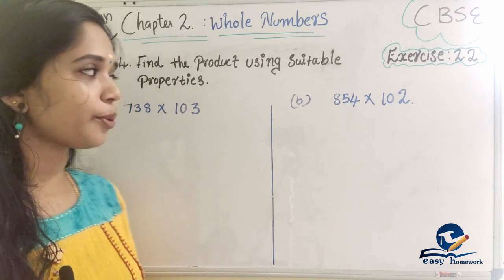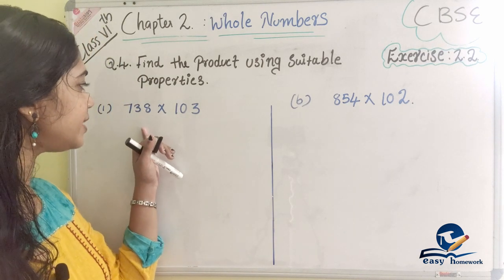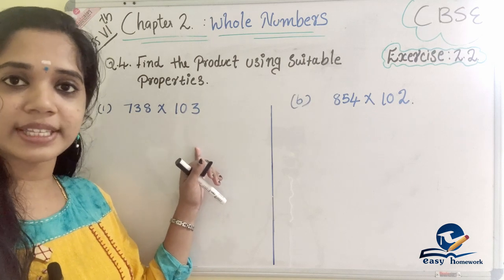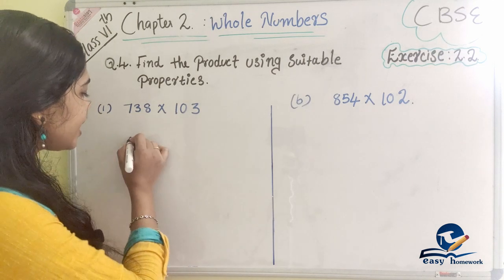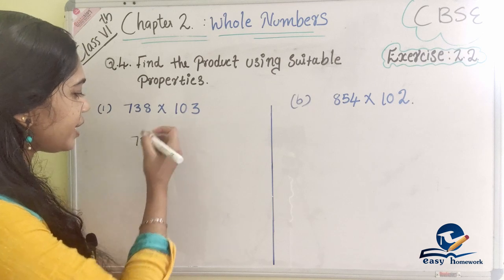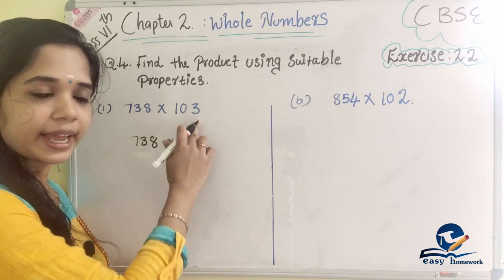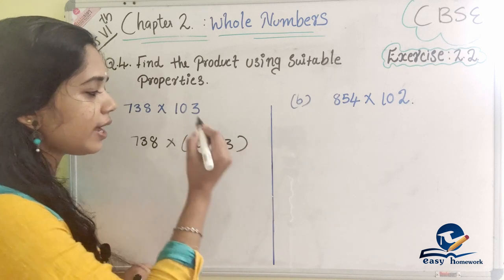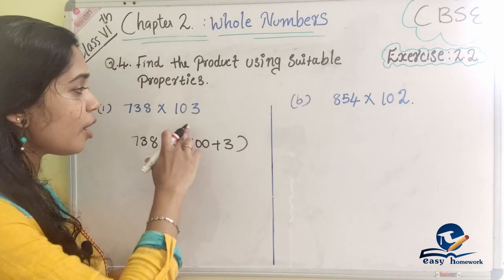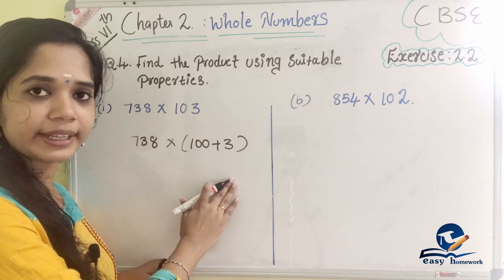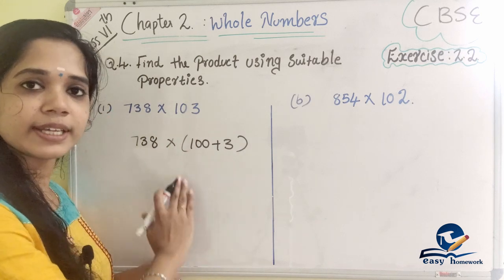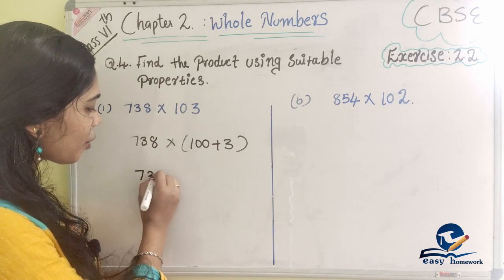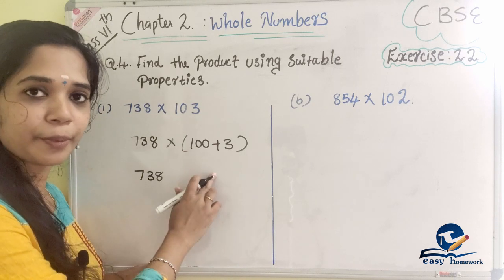We will check the first question: 738 into 103. This is how we can solve it. So, 738 into 103 — I will change 103 into 100 plus 3. 103 is split into 100 plus 3. We will find the property — what is the property? Distributive property.